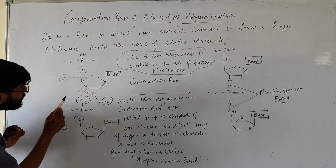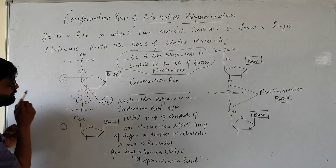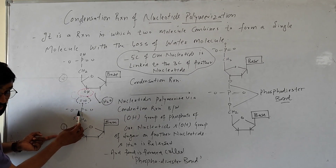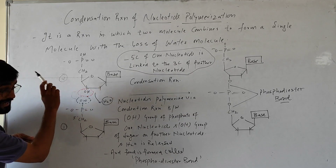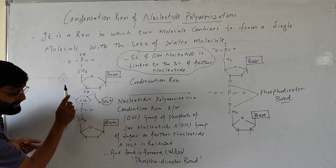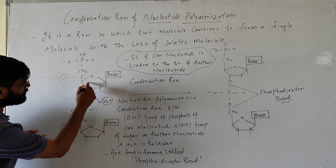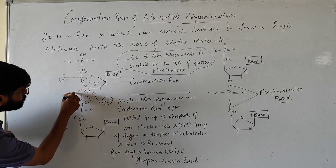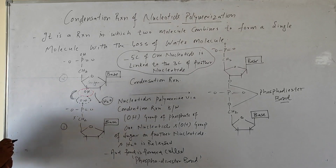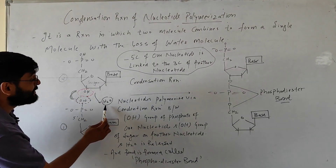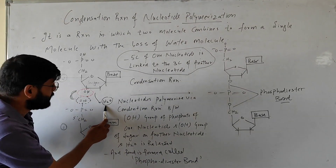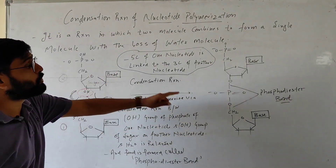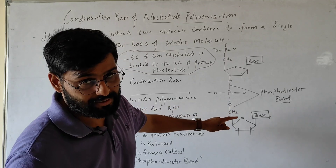And on carbon number 3 of this sugar an OH group is present. So condensation reaction occurs between these two OH groups — one OH group present on the first nucleotide's phosphate group, and another OH group present on the second nucleotide at carbon number 3 of the sugar. Condensation reaction will occur between these two OH groups, and there will be a release of water.